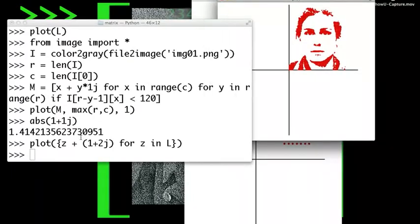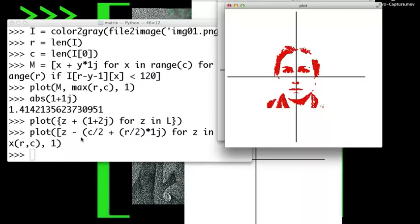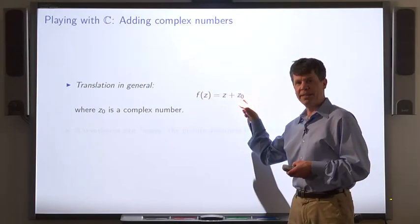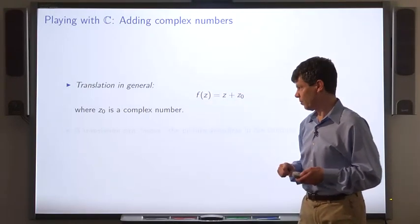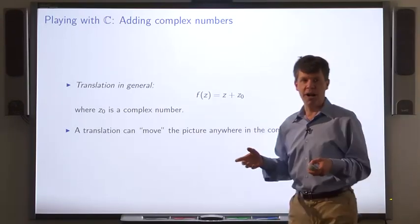Take this image, translate them so that the image is centered at the origin. Given the input, it adds a complex number z0 to the input. And a translation can move the picture anywhere in the complex plane.